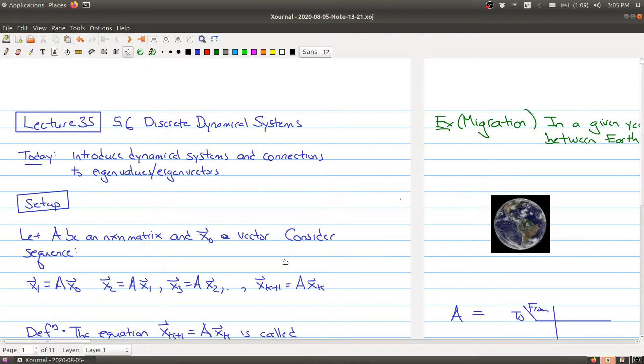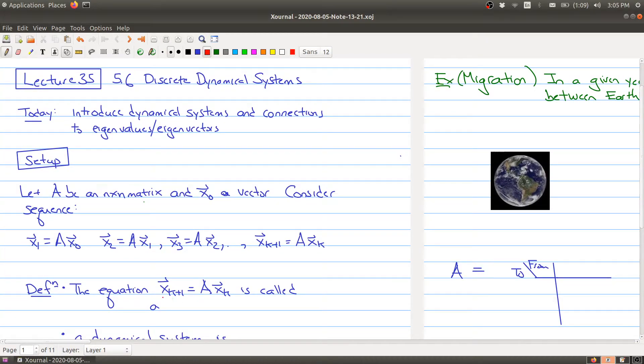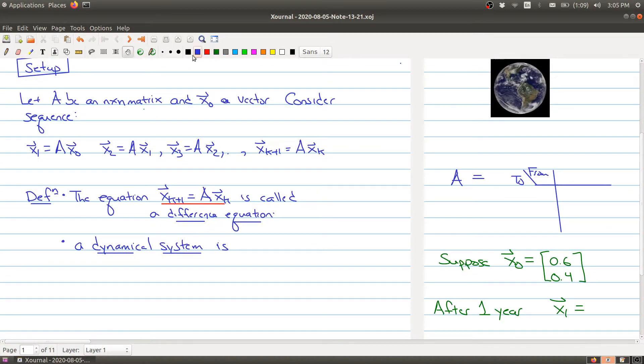This equation, x_(k+1) = A·x_k, is called a difference equation. It's explaining how the vector changes as we go from one vector to the next vector in the sequence.